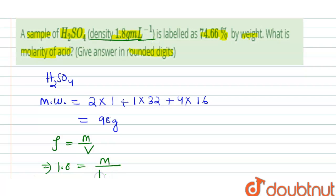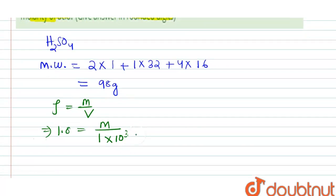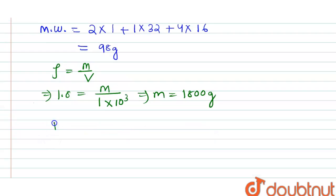We can convert liter to milliliter, so here mass will come 1800 gram. This is 100% by weight. 100% by weight is equal to 1800 gram.